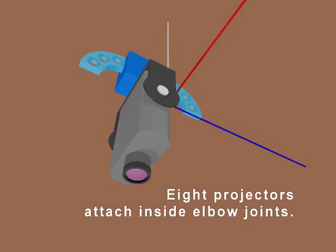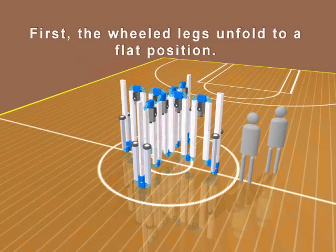The framework contains eight projectors attached inside elbow joints. First, wheeled legs unfold to a flat position.